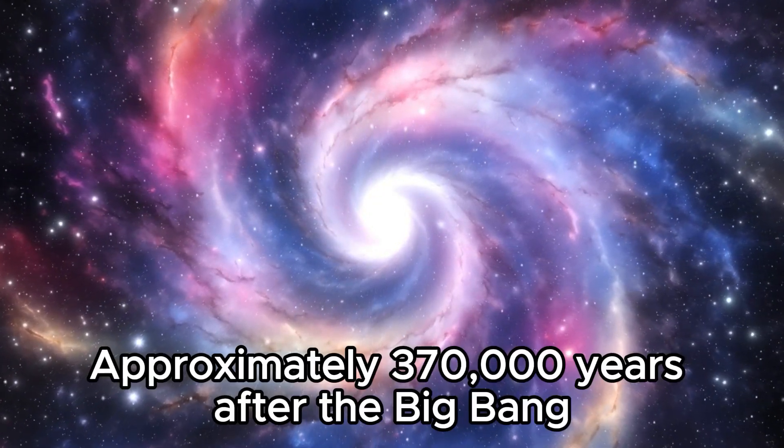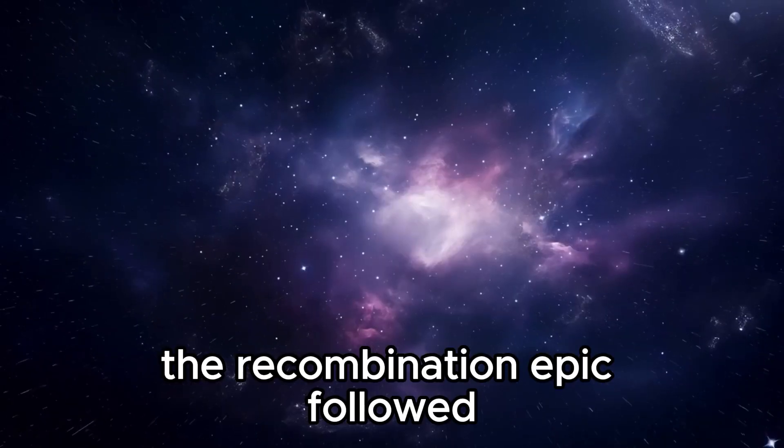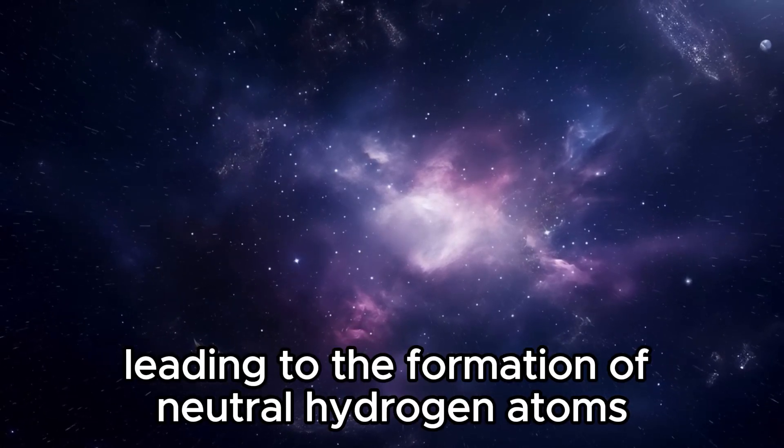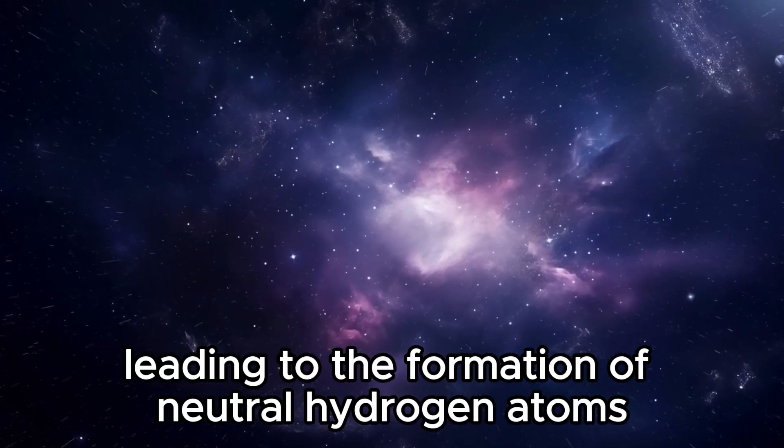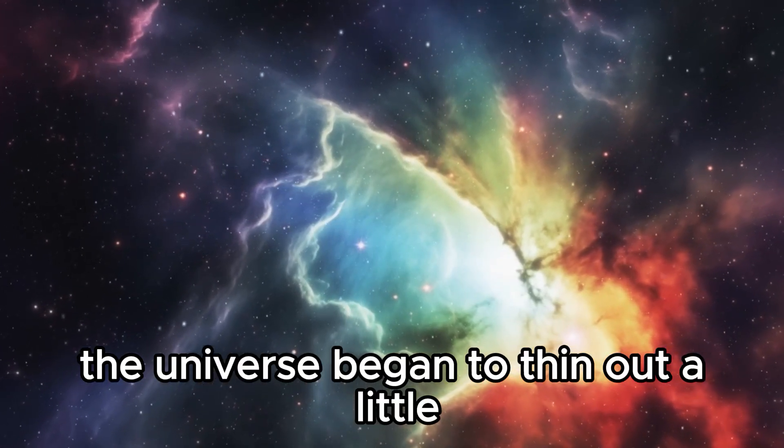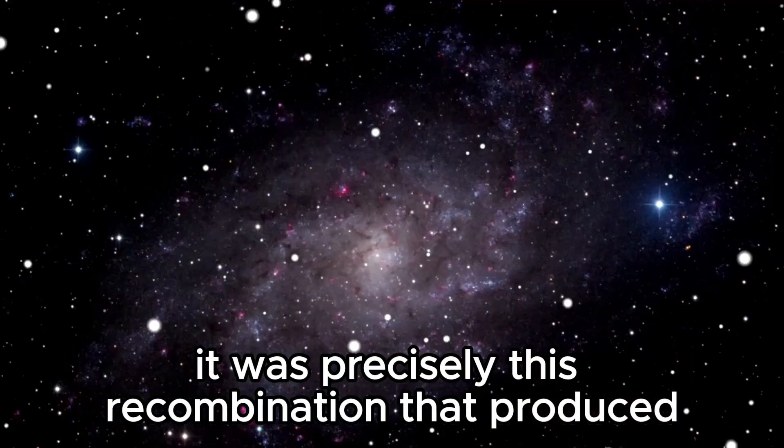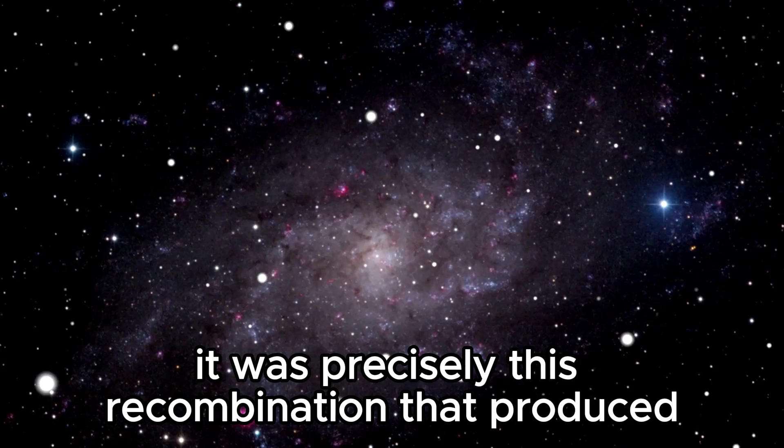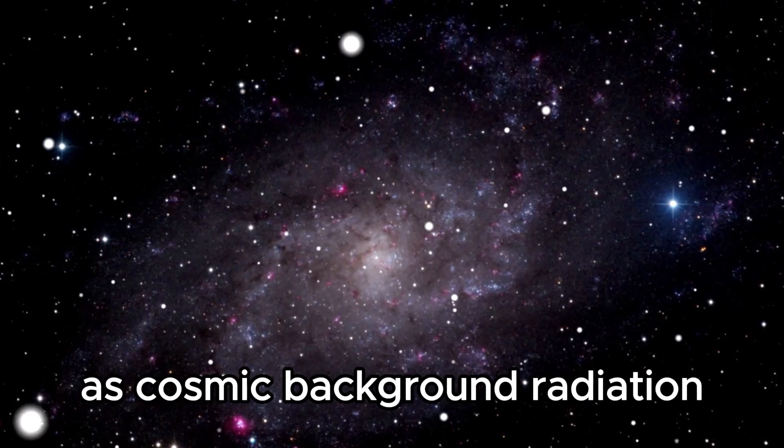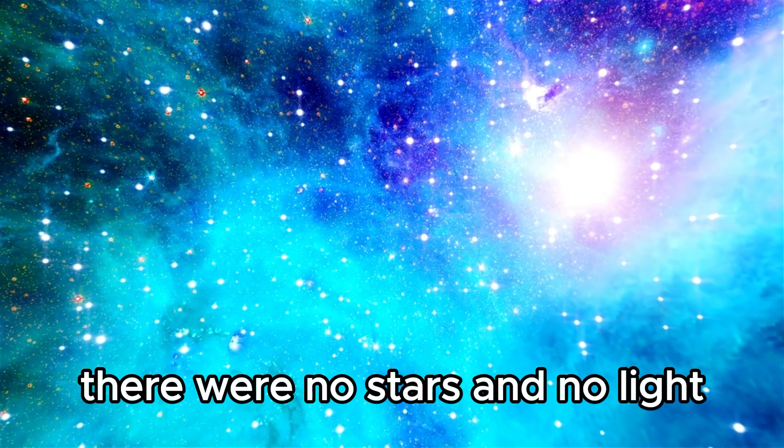Approximately 370,000 years after the Big Bang, the recombination epoch followed, and the universe cooled further, leading to the formation of neutral hydrogen atoms. This epoch marks the point in time when the universe began to thin out as the photons were no longer constantly colliding with free electrons. It was precisely this recombination that produced the radiation that we can still measure today as Cosmic Background Radiation. At this time, the universe was still dark. There were no stars and no light.